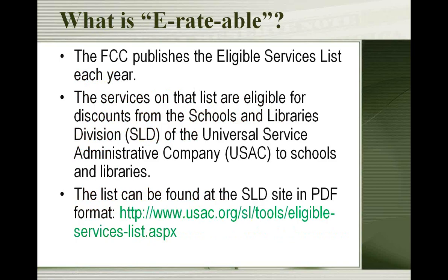Every year the FCC publishes a new eligible services list. For whatever year you're applying for, you have to make sure you look at the correct list to see what is eligible that year. This is updated annually because there are new technologies and new ways of getting internet and phone. If a service is on this list it's eligible; if you can't find it on the list, you have to assume it's not something you can apply for e-rate funding for. Both the 2009 and 2010 lists are currently available on the website.